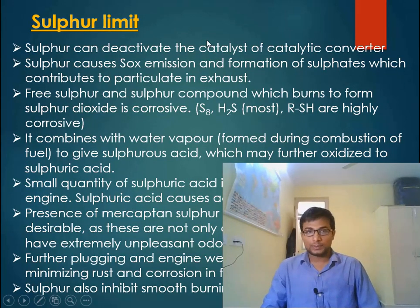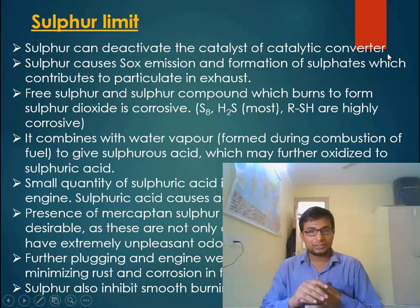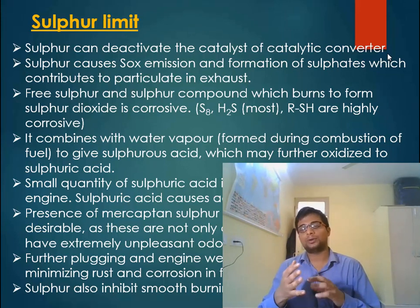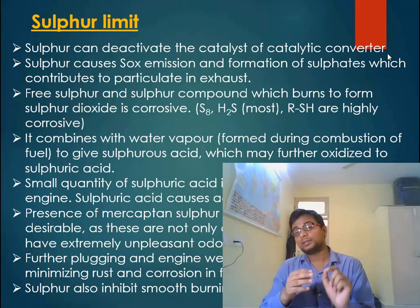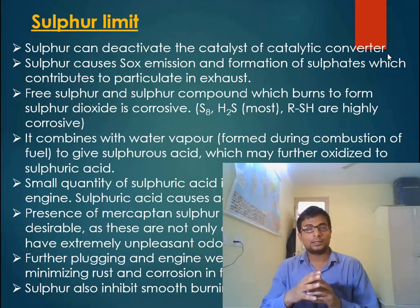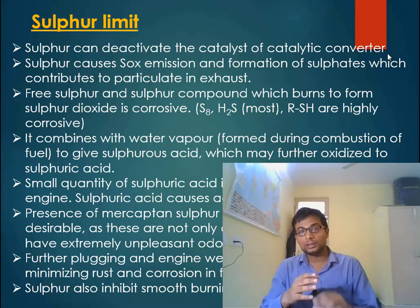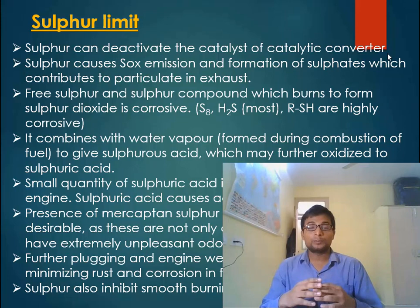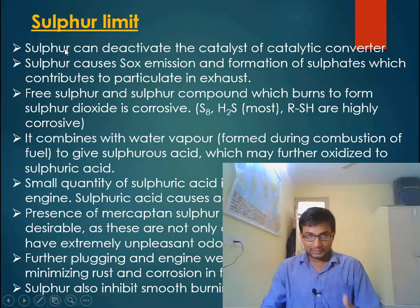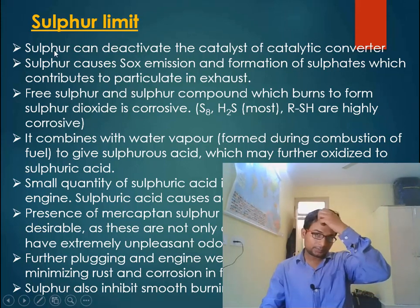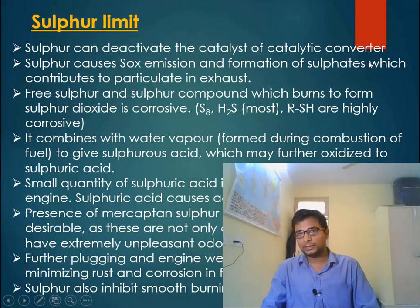Now there is a limitation on sulfur. Sulfur can also deactivate metal catalysts — just like in catalytic reforming or isomerization units where naphtha is first treated in a hydrotreatment reactor to reduce sulfur content, because sulfur deactivates platinum catalysts. Similarly, in the catalytic converter, sulfur can deactivate the catalysts.